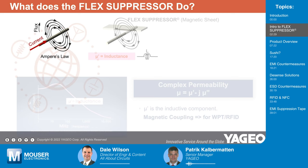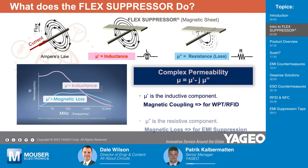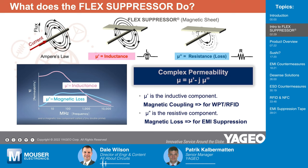The first one is the inductance, or the L characteristic — the inductive component. It's ideal for applications where wireless power transfer, RFID, or NFC is involved. Then you have the opposite characteristic, which is the magnetic loss or resistance — used for EMI suppression. By improving the magnetic flux or protecting against outside interference like metal, that would be the inductance part. Or if the resistance or magnetic loss of the flex suppressor is strong, it's going to break the magnetic flux and absorb it — the flux lines get smaller and dotted, meaning they are being absorbed.